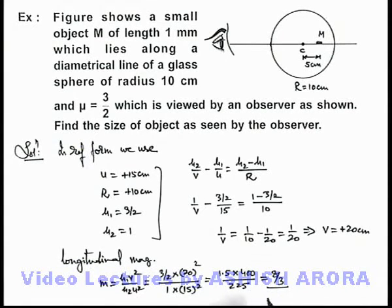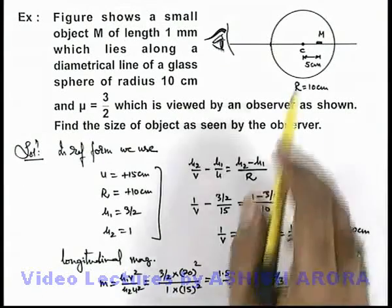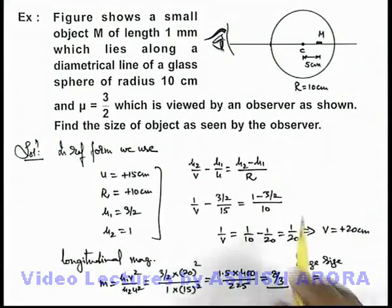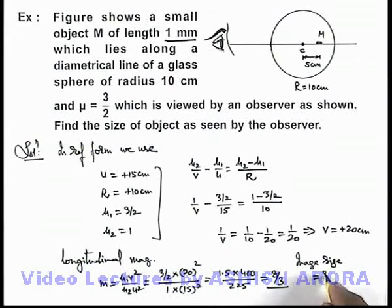So if this is the longitudinal magnification, here we can write image size. As we are finding out the image size along the length of optic axis, this can be written as longitudinal magnification multiplied by object size which is given here to be 1 millimeter. So it'll be 8/3 multiplied by 1, so this'll be 8/3 millimeters. That'll be the answer to this problem.